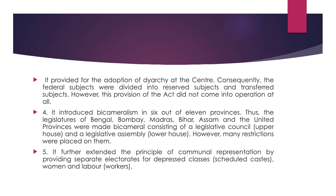The next feature is that it introduced bicameralism in 6 out of 11 provinces. Thus, the legislatures of Bengal, Bombay, Madras, Bihar, Assam, and the United Provinces were made bicameral, consisting of a legislative council (the upper house) and a legislative assembly (the lower house). However, many restrictions were placed on them. The next feature is that it extended the principle of communal representation by providing separate electorates for depressed classes, for women, and for labour.